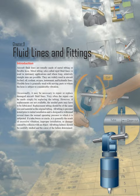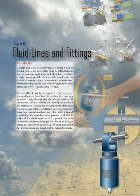Flexible hose is generally used with moving parts or where the hose is subject to considerable vibration. Occasionally, it may be necessary to repair or replace damaged aircraft fluid lines. Very often the repair can be made simply by replacing the tubing. However, if replacements are not available, the needed parts may have to be fabricated. Replacement tubing should be of the same size and material as the original tubing. All tubing is pressure tested prior to initial installation and is designed to withstand several times the normal operating pressure to which it is subjected.